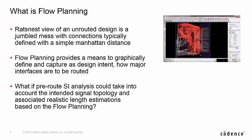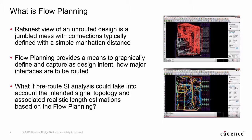This design intent makes sense for major interfaces but also can be applied to any logic in the design. Here's the same design with flow planning applied — this certainly makes sense in terms of driving the router. But what if your pre-route SI analysis could leverage the same data? What if the length of your unrouted connections were based on the length of the flow planning guidance? Would this allow you to better optimize your design?